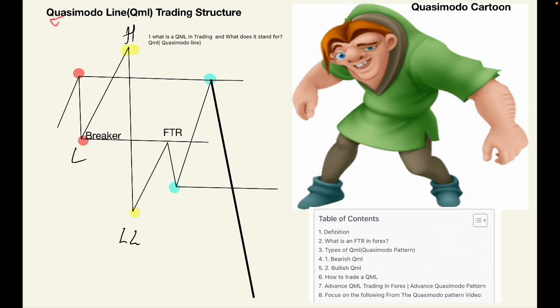Quasimodo Line, Quasimodo which is this cartoon that you see here. So the QML structure looks like this. You can just flip it if it's a bullish QML, you can just flip the whole structure. But as we proceed with this lesson, you're going to see different examples and different types of QML, so you're definitely going to get it.